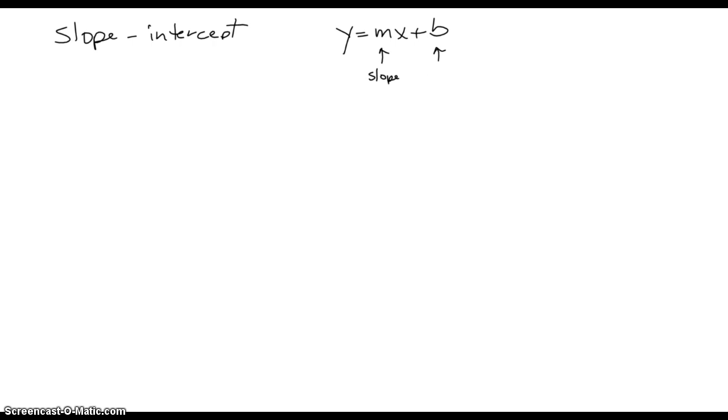m represents the numeric value for the slope. b represents the y value for the y-intercept. So we're talking about, let me just do a real quick graph here. If this is our x and y-axis,